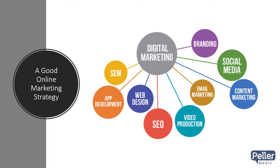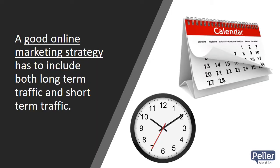Today we're going to talk about a good online marketing strategy, or what actually makes up a good online marketing strategy. The first thing you have to include is both long-term traffic and short-term traffic — traffic that's going to help you out short-term versus traffic that's going to help you long-term, meaning you're going to get clients today versus setting yourself up for clients over the long term. Paid advertising and SEO are two alternative types of traffic.